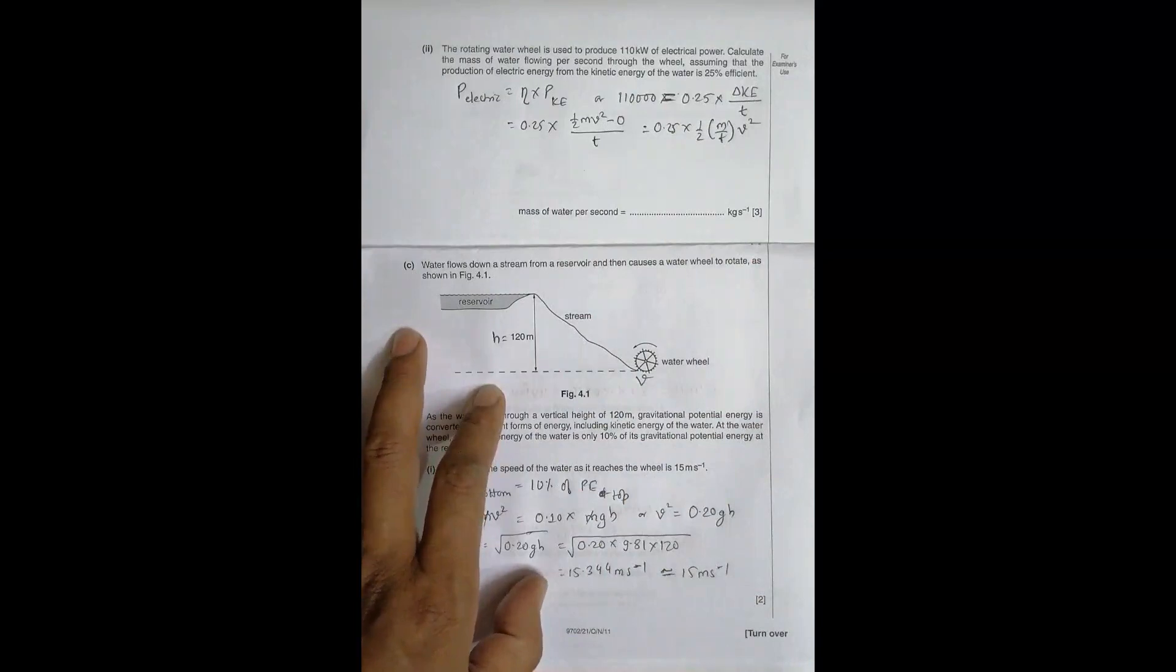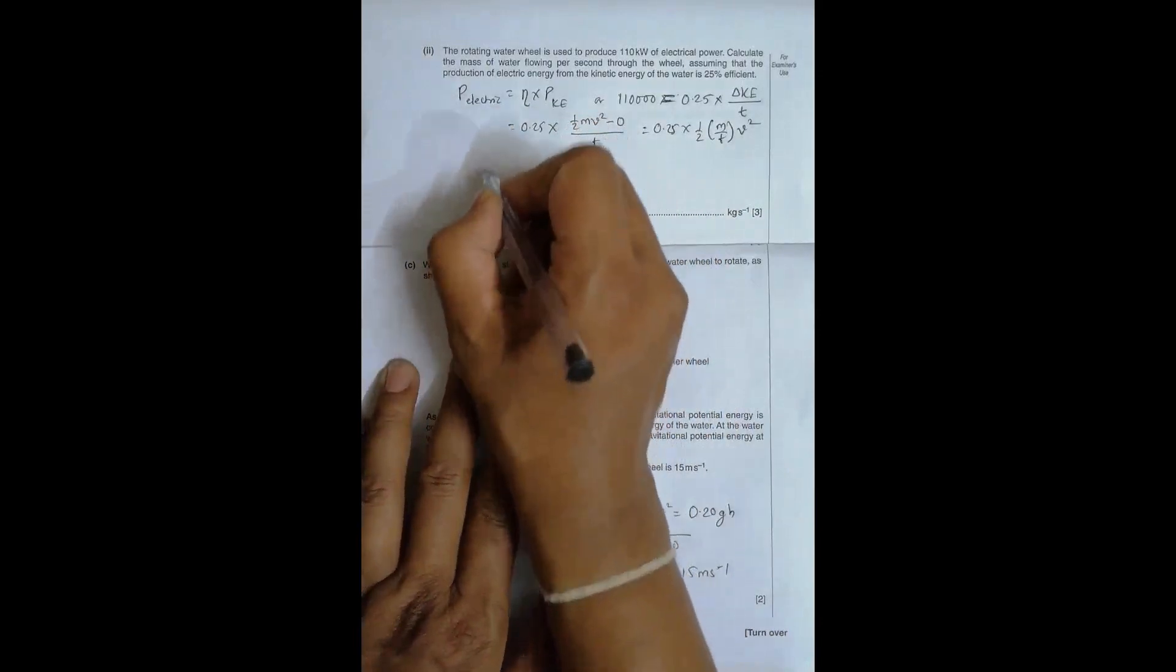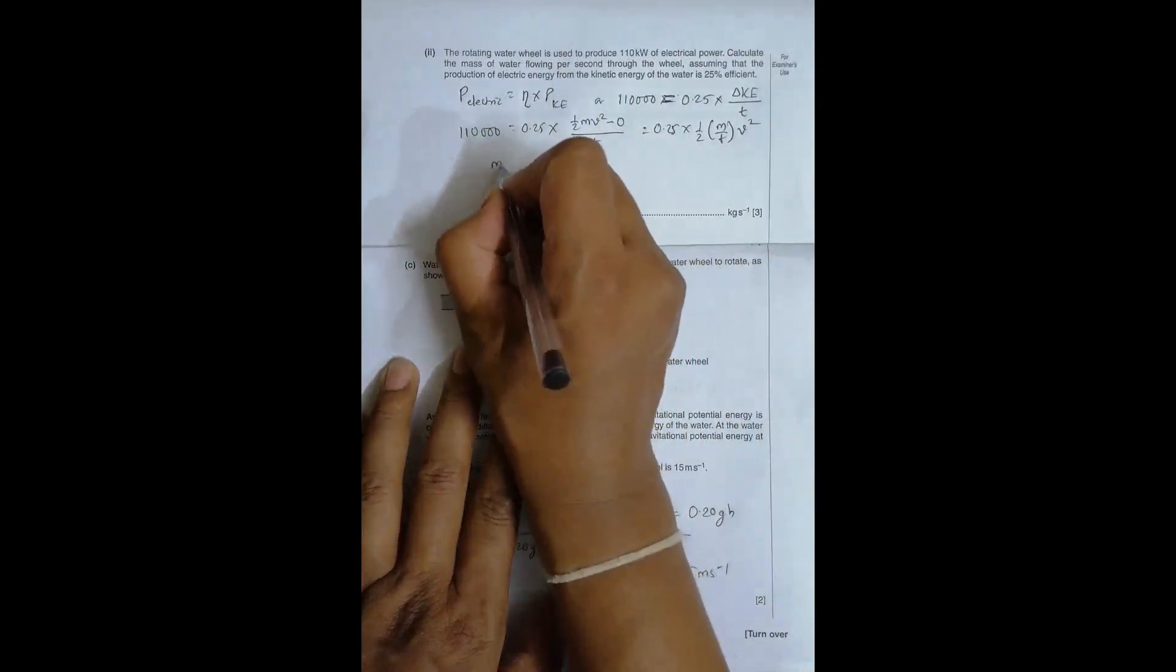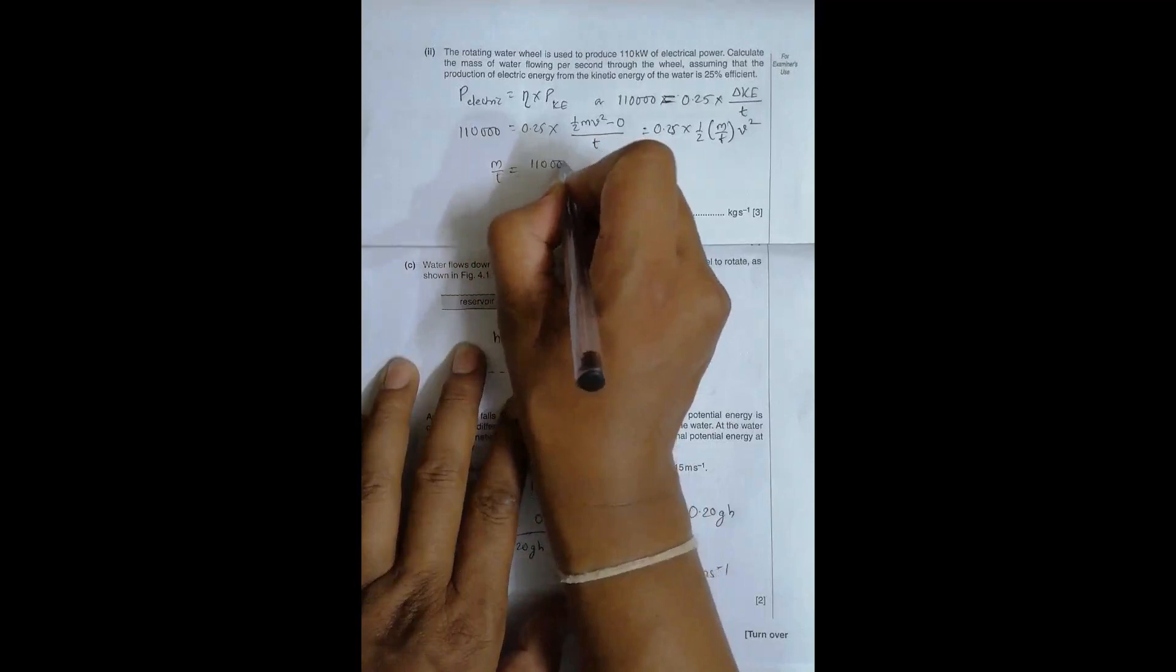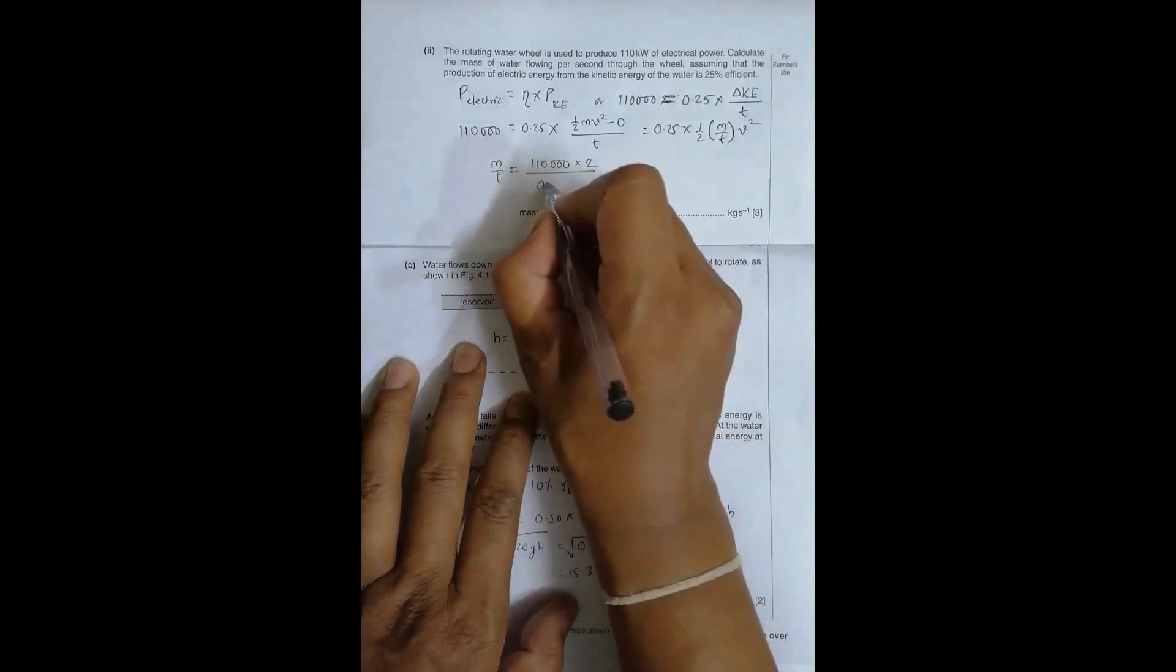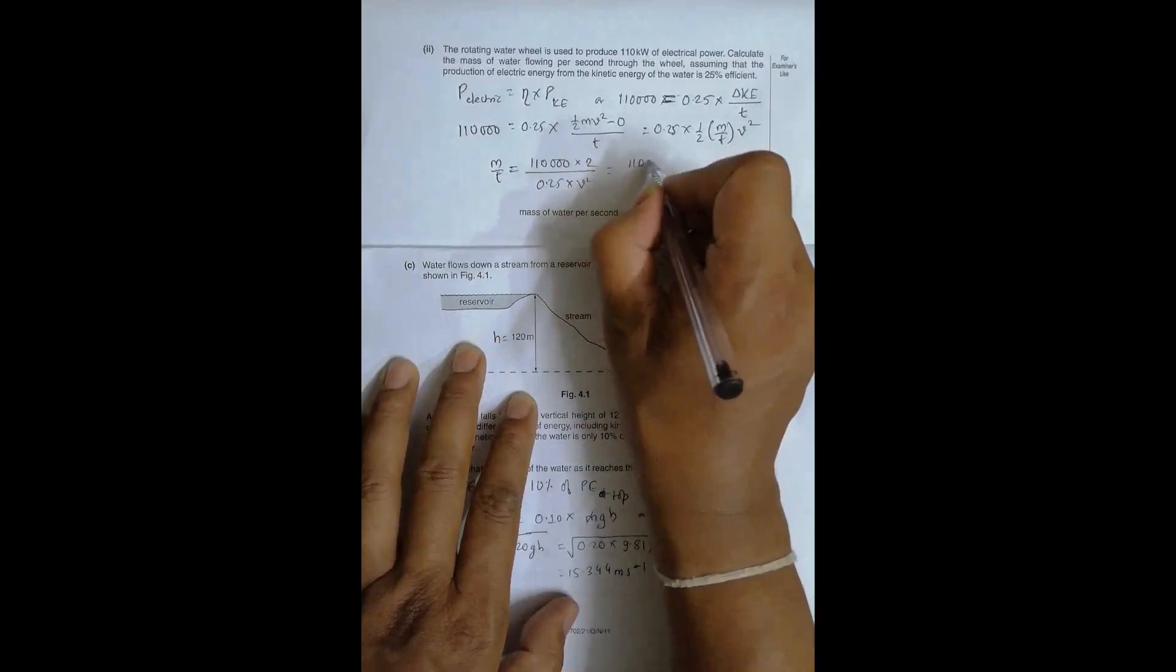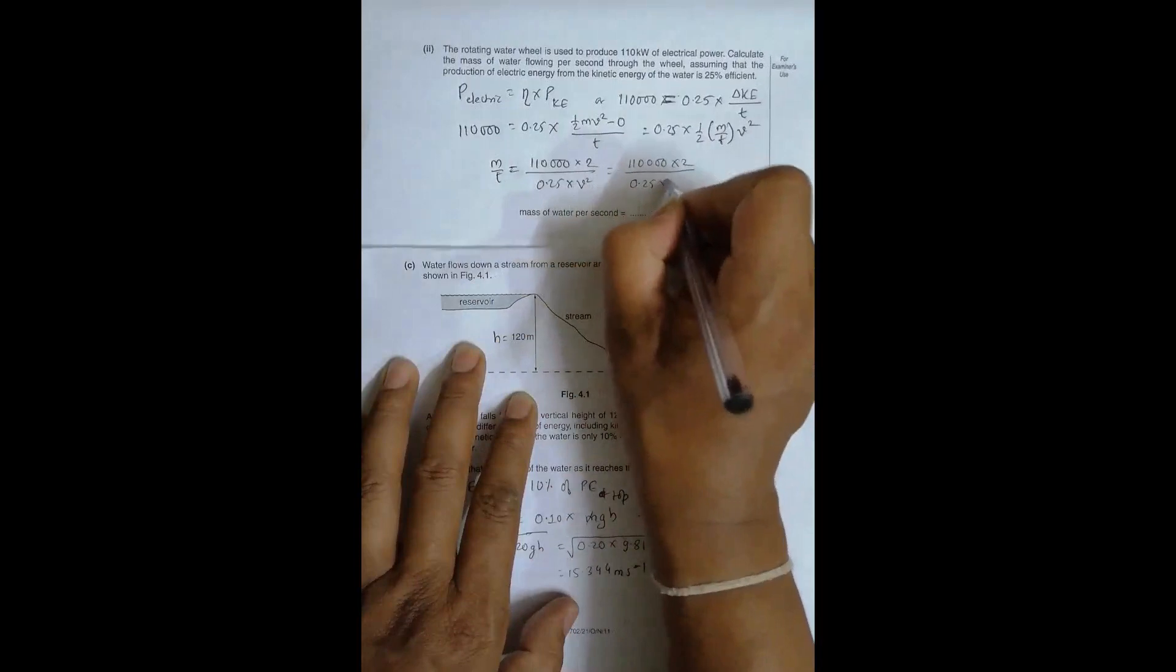So here, what we have to find is mass per unit time. So this M by T will be equal to, so this is 110,000. So from here, I will have M by T is equal to 110,000 into, these two goes here, 2 divided 0.25 into V square.